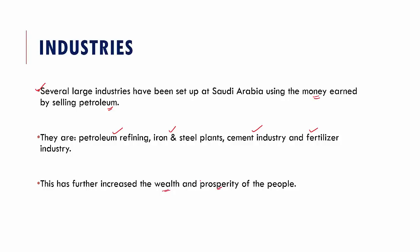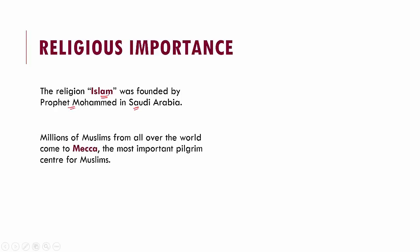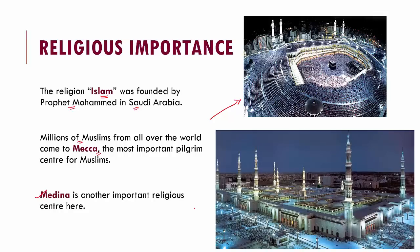Saudi Arabia also has great religious importance. The religion of Islam was founded by Prophet Muhammad in Saudi Arabia. Millions of Muslims from all over the world travel to Mecca, the most important pilgrimage center for Muslims. Medina is another very prominent religious center. These two iconic Muslim pilgrimage centers — Mecca and Medina — are both located in Saudi Arabia.